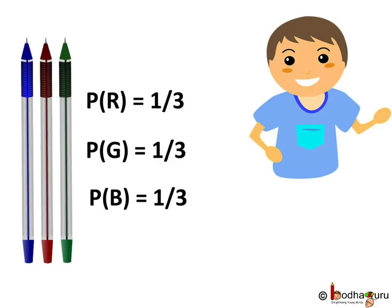Same way, the probability of picking a green ball pen is P(G) = 1/3. Same way, the probability of drawing a blue ball pen is P(B) = 1/3. An event having only one outcome of the experiment is called an elementary event.